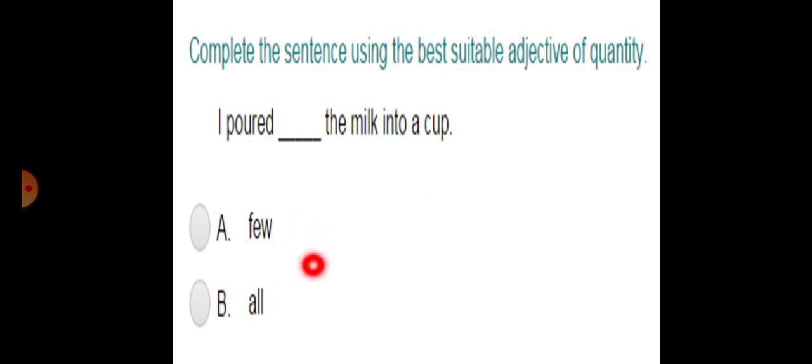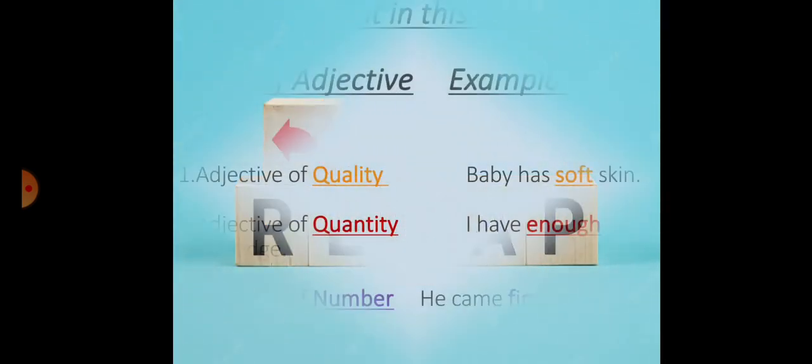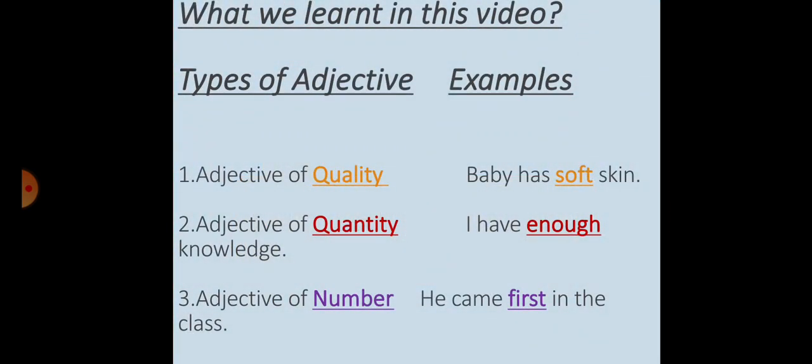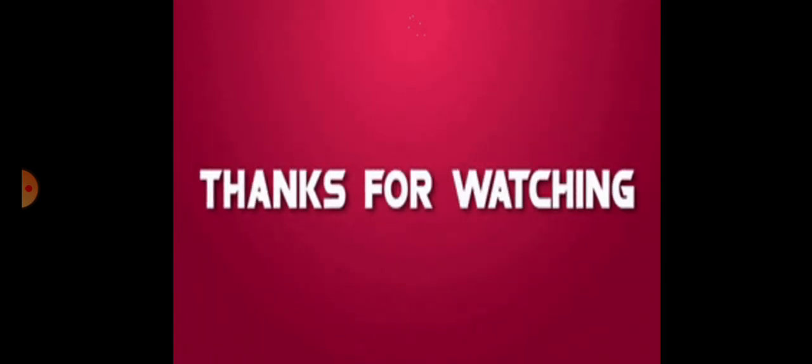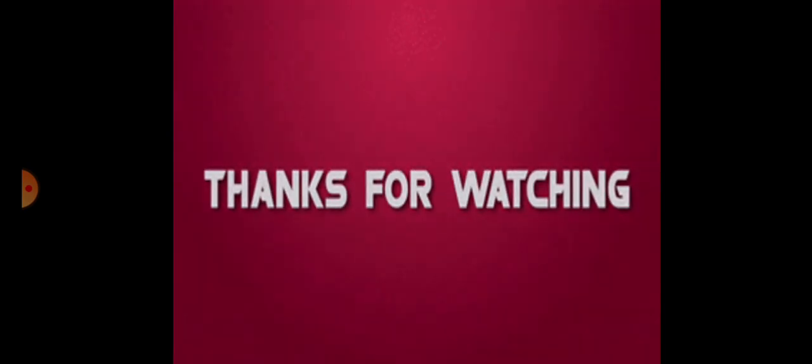Of these two, which one is appropriate over here? Okay, now let's recap, viewers. Aaj humne kya sikha is lesson mein? Three things: Adjective of quality - example is 'baby has soft skin', soft is its quality. Adjective of quantity - 'I have enough knowledge', enough is adjective of quantity. Adjective of number - 'He came first in the class', first is the adjective of number. That's all for today.